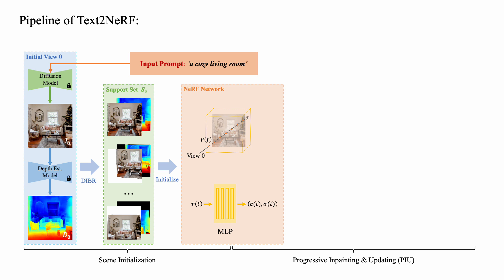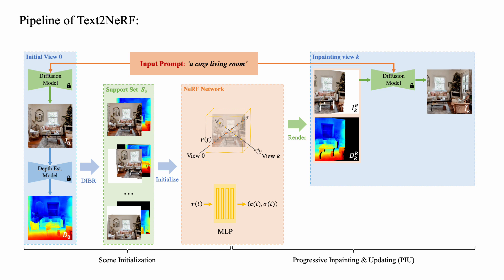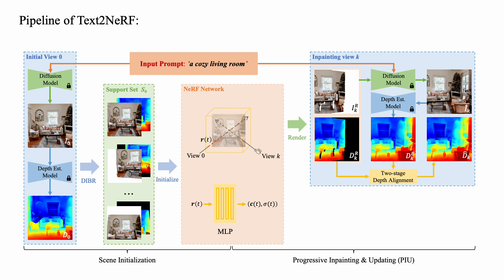Specifically, we render the radiance field in a novel view K and obtain the RGBD images with missing regions. We then implement text-driven inpainting by using the diffusion model to complete the missing regions according to the input prompt. For the inpainted image, we also use the depth estimation model to infer its geometric prior. Considering the misalignment between depth maps estimated in different views, we employ a two-stage depth alignment strategy to align the newly estimated depth map with known depth information.